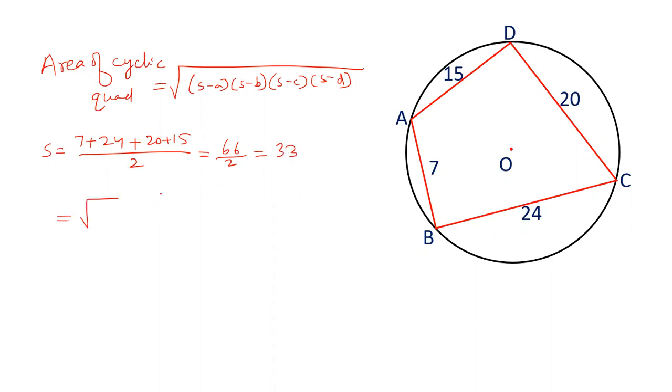Now let's put value in the formula. s is 33, so 33 minus 7, 33 minus 24, 33 minus 20, 33 minus 15. Under root: 33 minus 7 is 26, this is 9, 13, this is 13, and 33 minus 15 is 18.